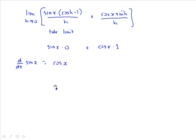Meaning that if you ever need to find the slope of the tangent line at any point on the sine curve, you take the cosine of that value, and that gives you the slope of the tangent line. We'll use that later with applications and graph questions.